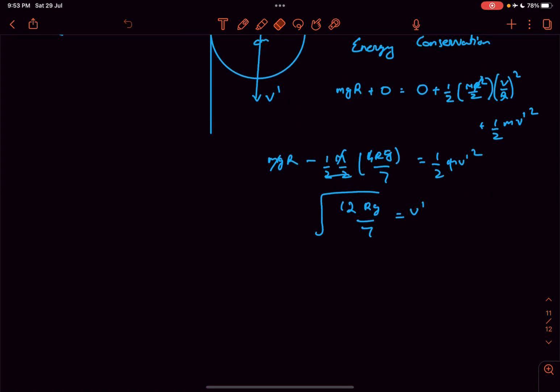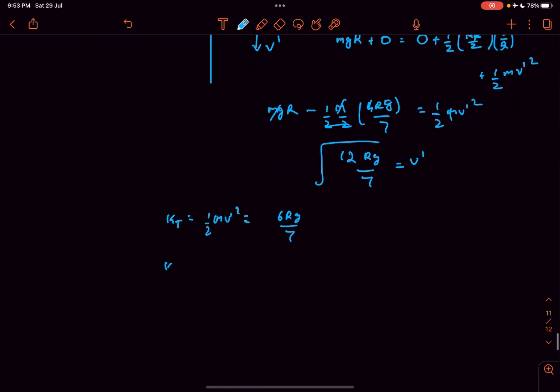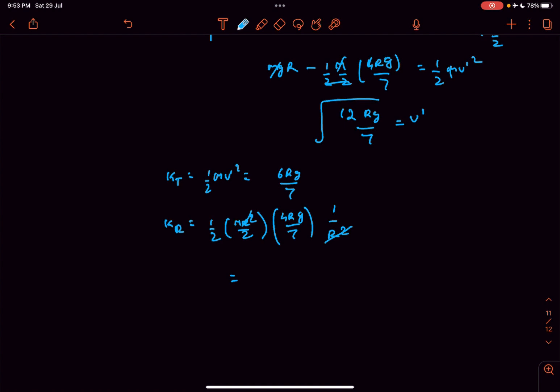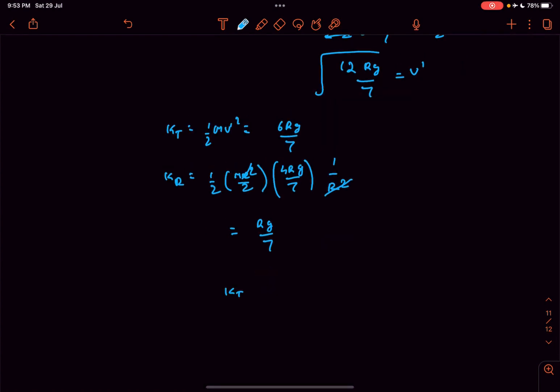The translational kinetic energy is going to be half m v dash squared which would simply be 6 rg by 7 and the rotational kinetic energy at this instant is simply going to be half i which is mr squared by 2 times omega squared which is v squared by r squared. If you solve it you'll get the rotational kinetic energy as rg by 7. Now they ask the ratio of translational kinetic energy to rotational kinetic energy and that is simply going to be 6 is to 1.